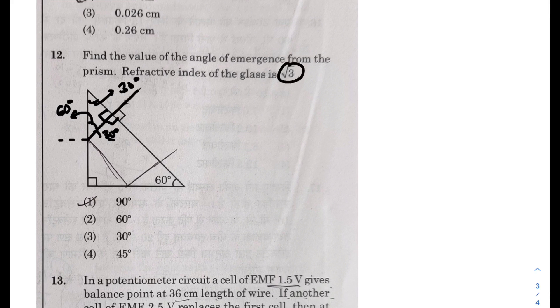So now 30 degrees for this, the critical angle would be sine inverse 1 over root 3, that would be the critical angle. So the critical angle would be sine inverse 1 over root 3. So this is definitely not going to undergo TIR.